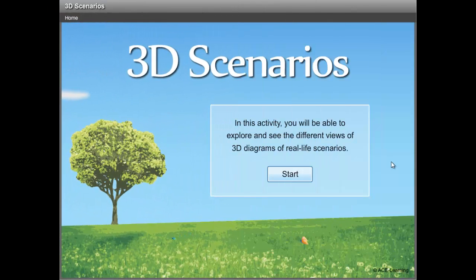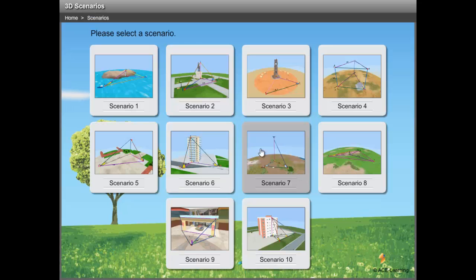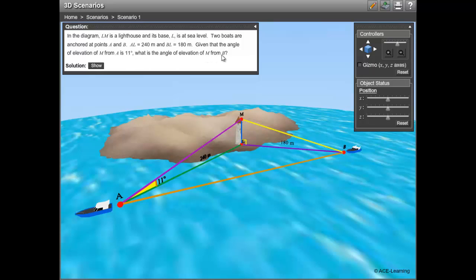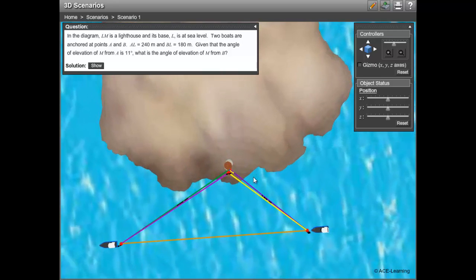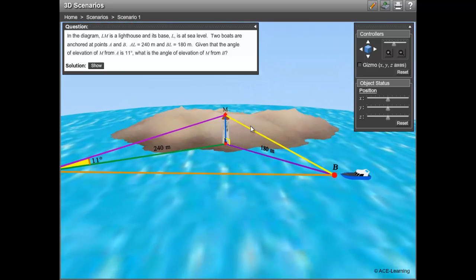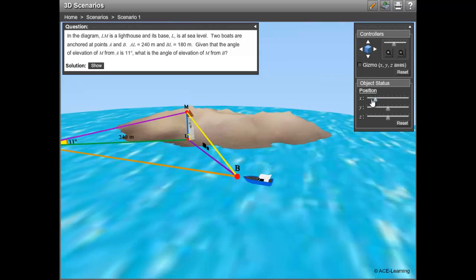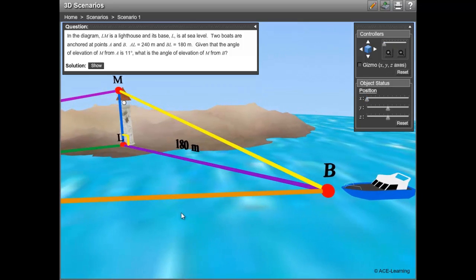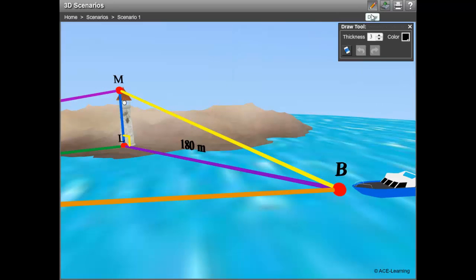Now the third 3D tool is for 3D diagrams of real-life scenarios. Let's select a scenario. First, view the problem. We are to find the angle of elevation of M from B. Next, locate the triangle where the required angle is. Right, it is in this triangle. And this is the required angle.